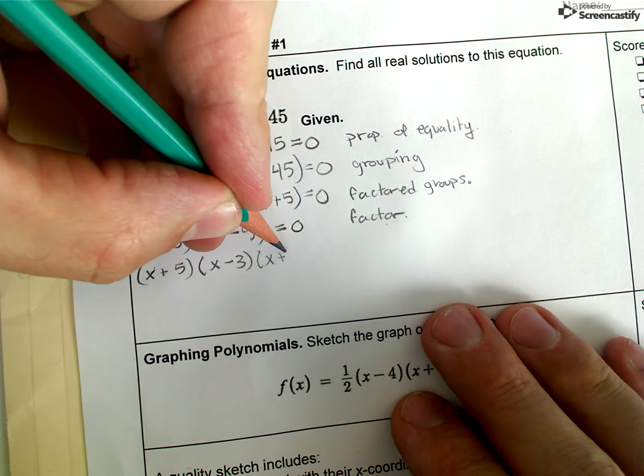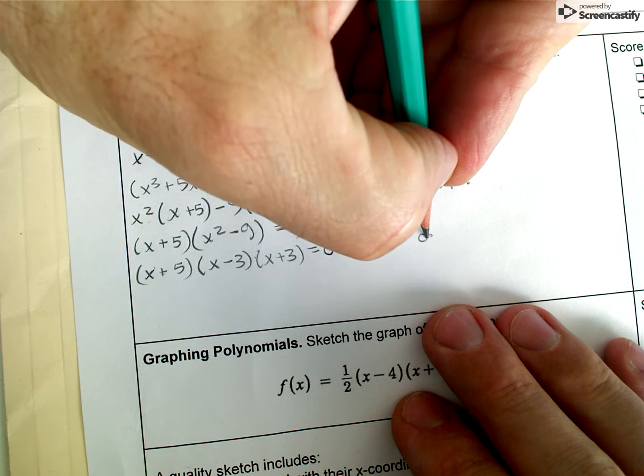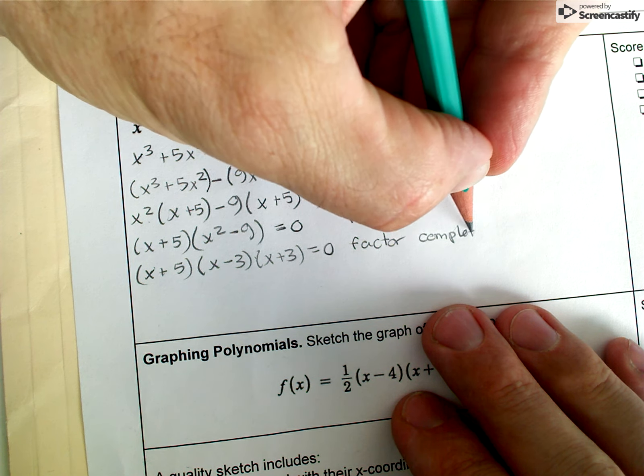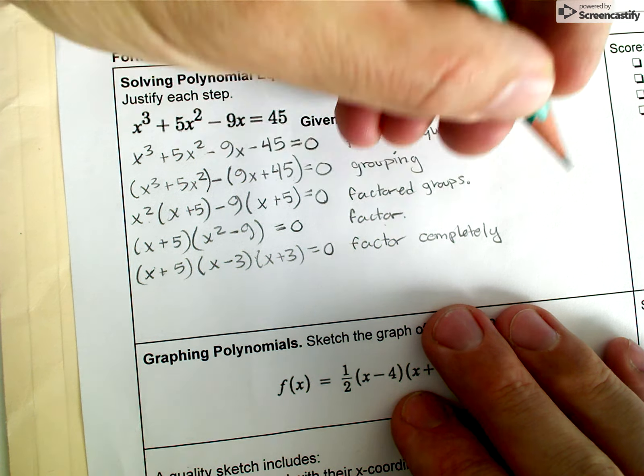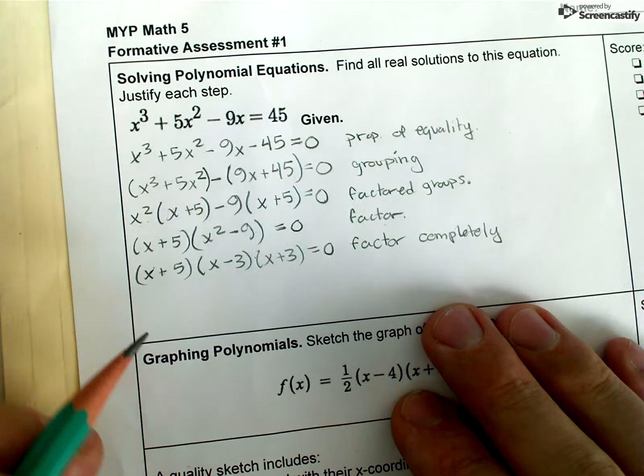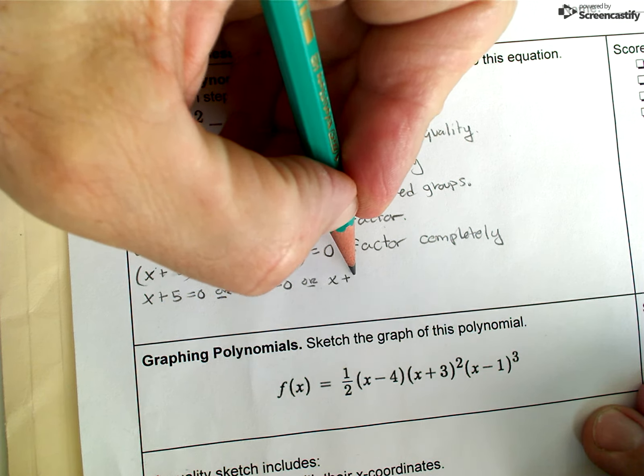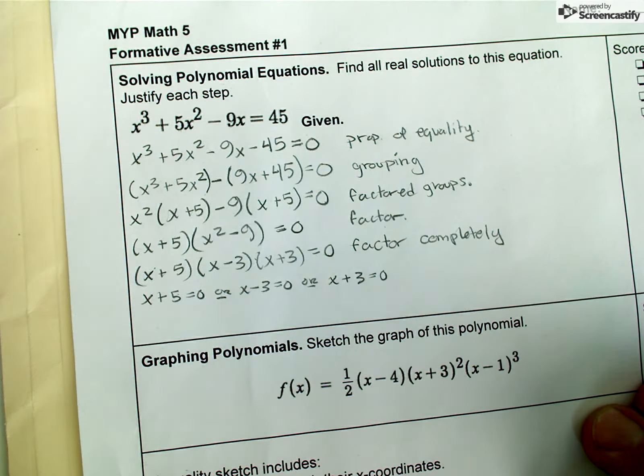I'm gonna treat it like a difference of squares: x minus 3, x plus 3. That is the pattern that a difference of squares follows when you factor it. I finally here say I factor completely, and that means I factored this as far as I can and I end up with these three factors.